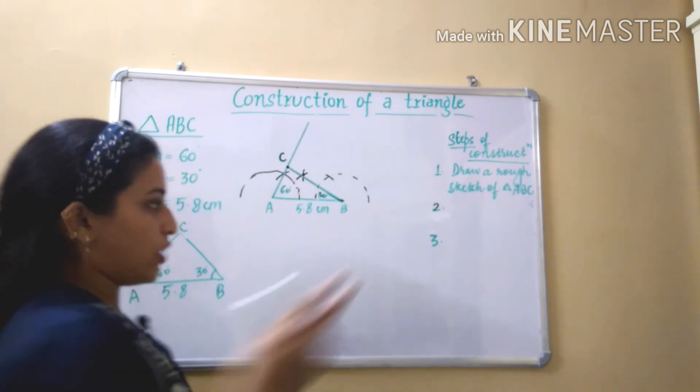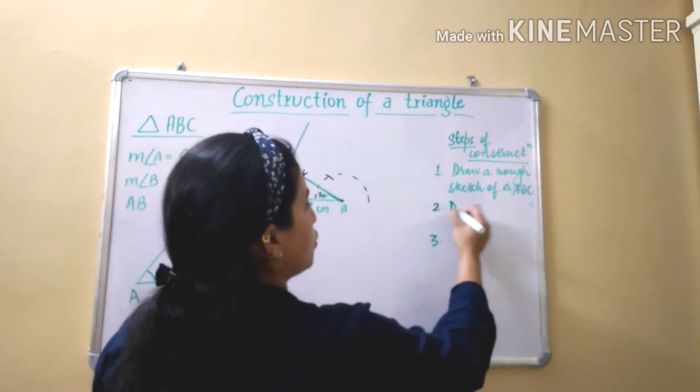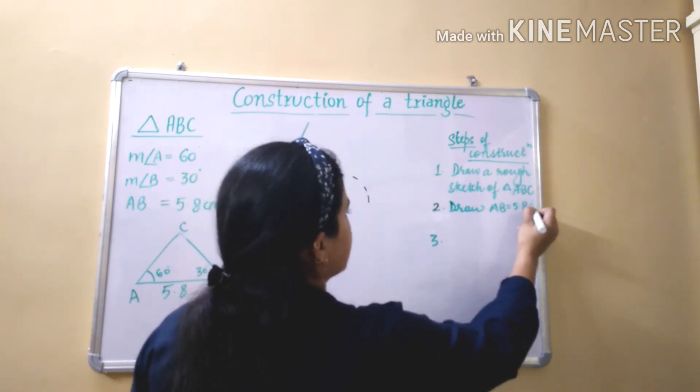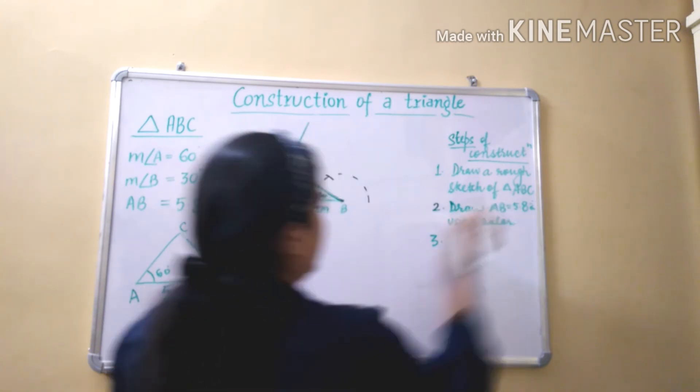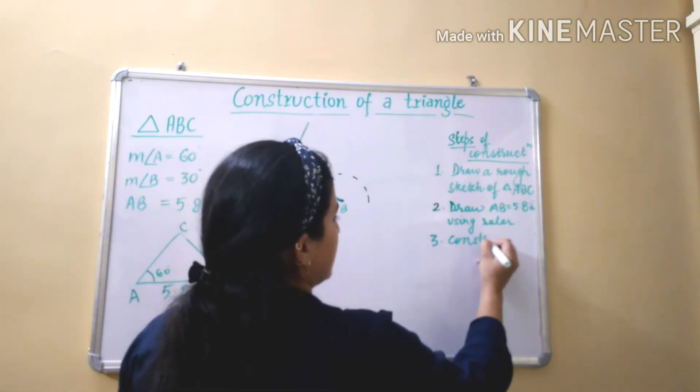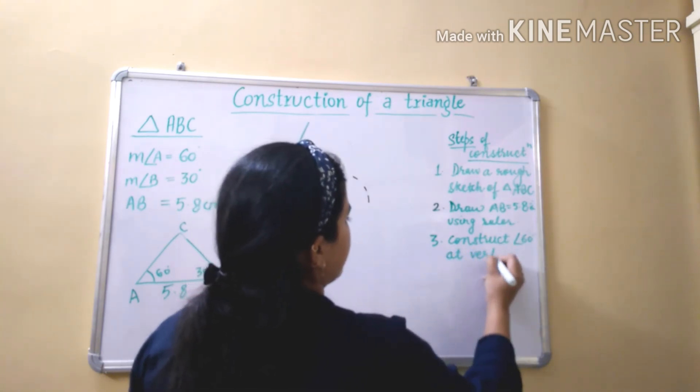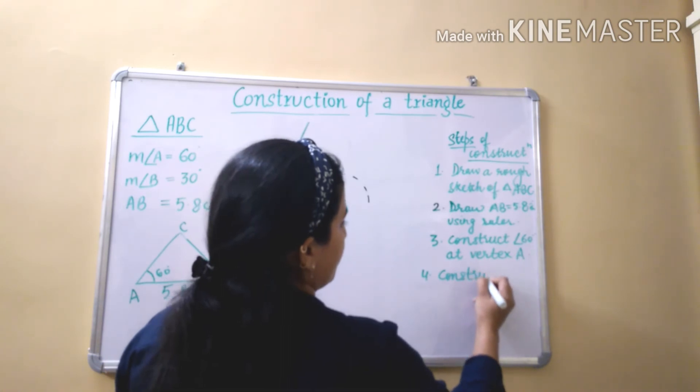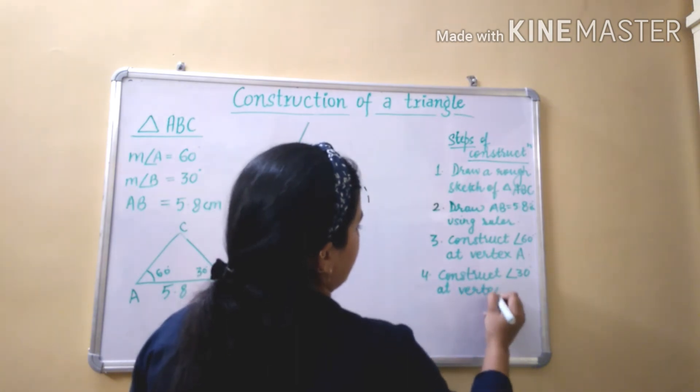Our second construction step is draw AB equal to 5.8 cm. Draw AB equal to 5.8 cm using ruler. Next we have constructed angle 60 degrees. Then construct angle 60 degrees at vertex A. Fourth, construct angle 30 degrees at vertex B.